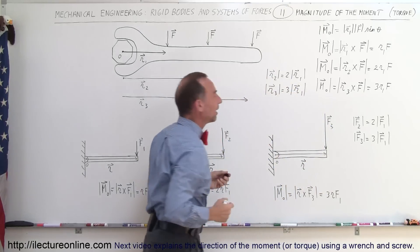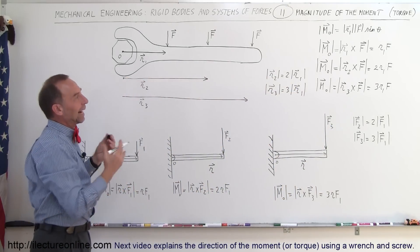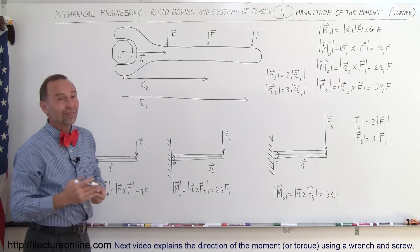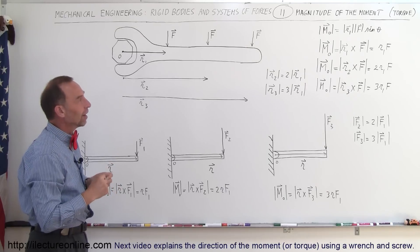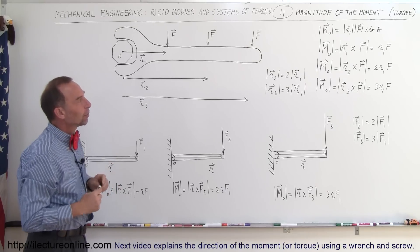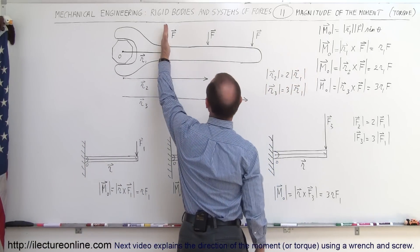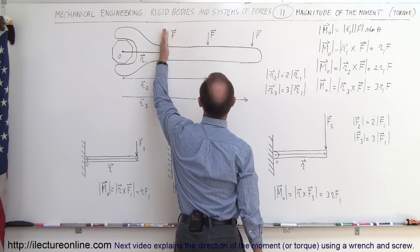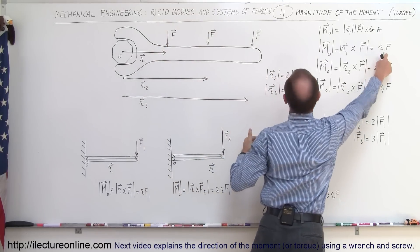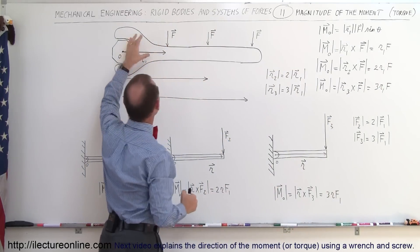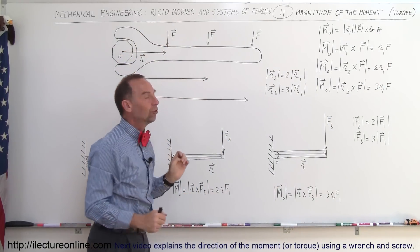In all of our examples here, the angle is 90 degrees, and since the sine of 90 degrees is equal to 1, we can just leave it off. The magnitude of the moment, in the case that we apply the force there, is simply equal to R1 times F — the magnitude of the position vector times the magnitude of the force.